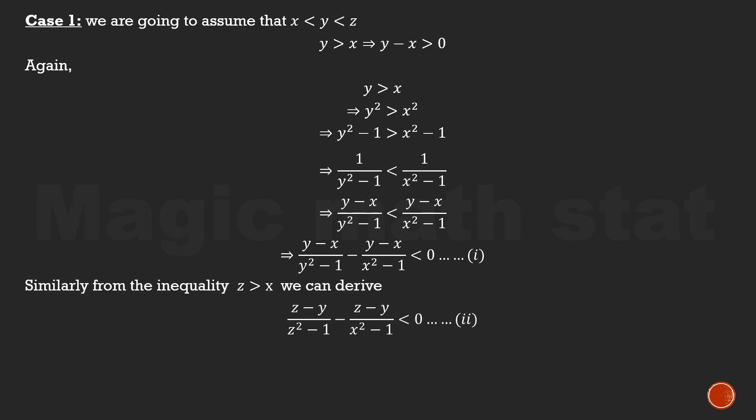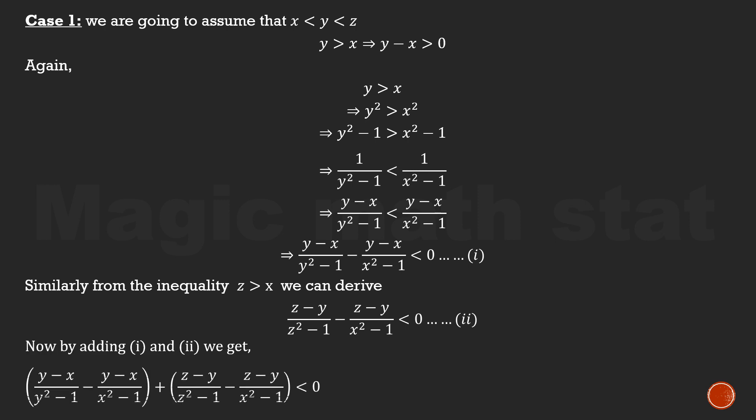Similarly, from z > y we can derive (z-y)/(z²-1) minus (z-y)/(x²-1) < 0. Call this Inequality 2.